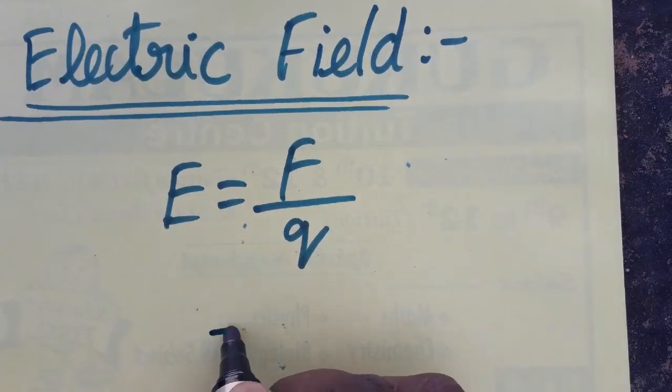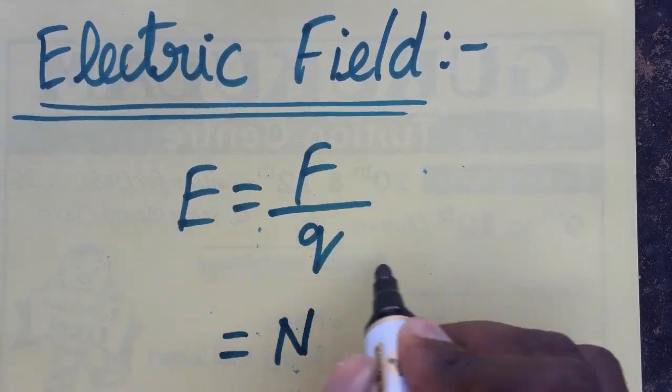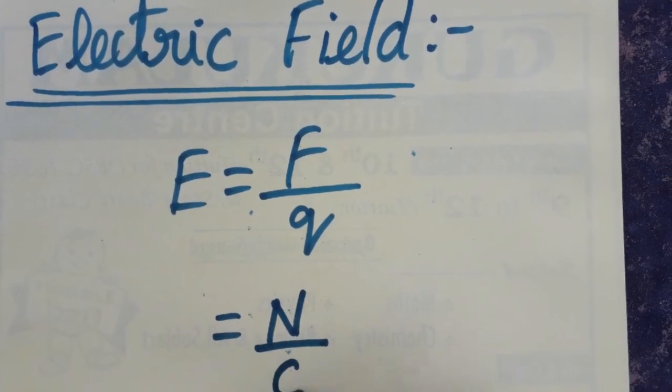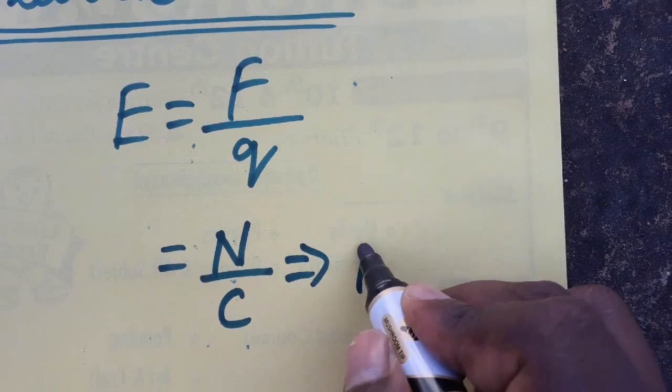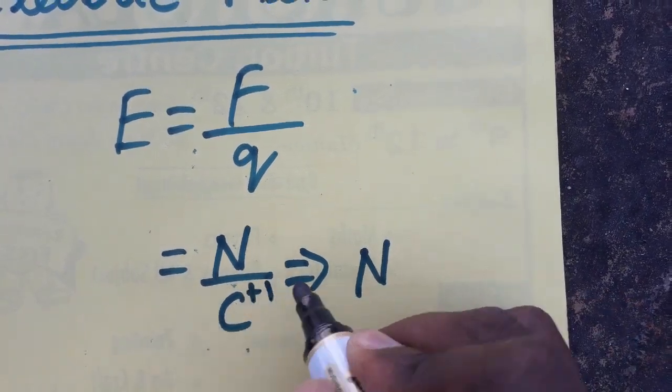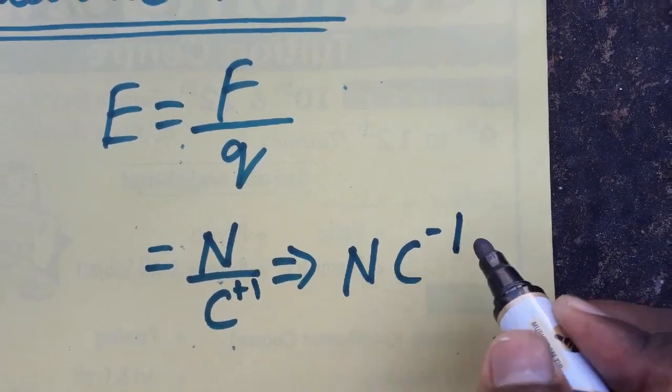Force is measured in newtons, charge SI unit is coulombs, so newton per coulomb. Newton I am taking as numerator, so newton, so plus one, it is going to change as minus one.